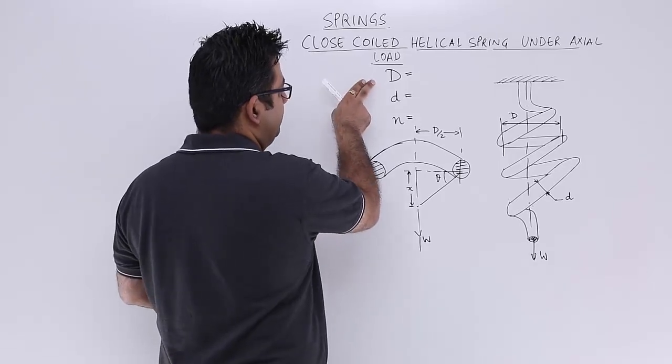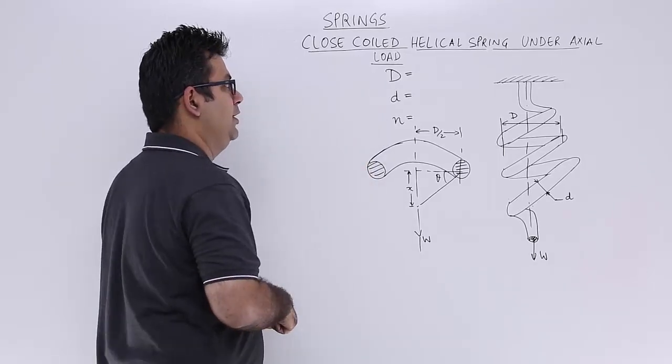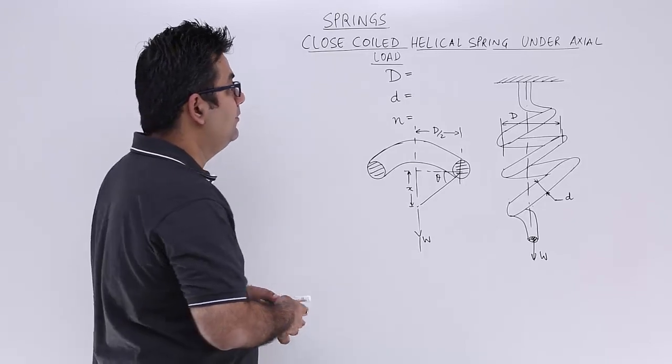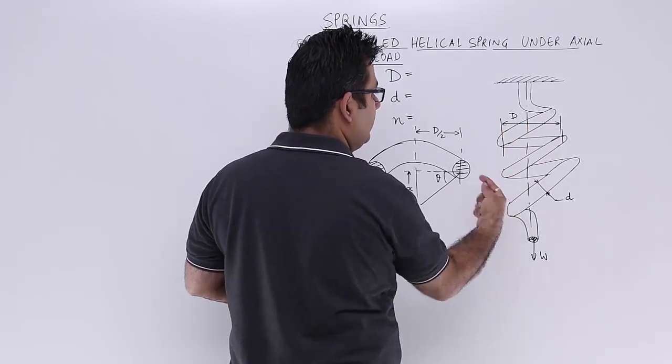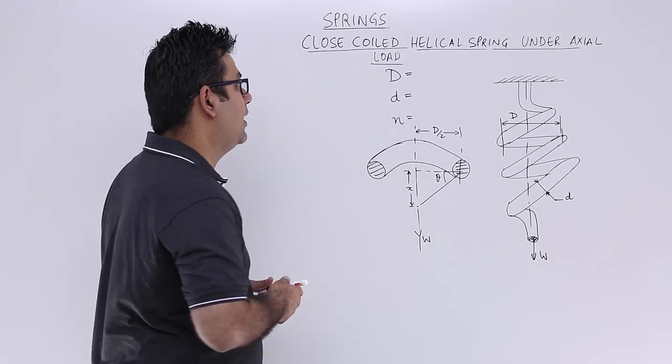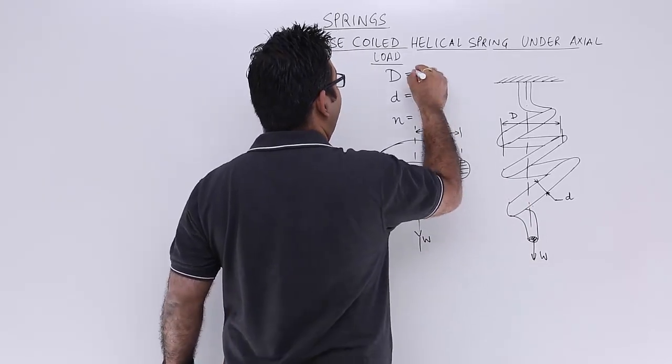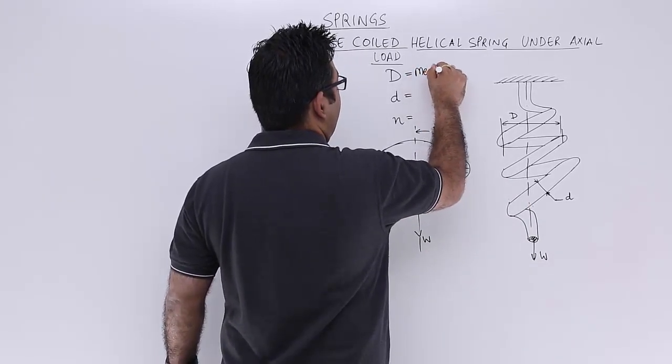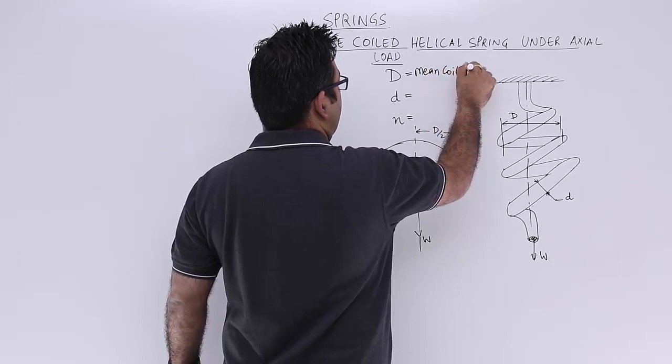First is D, then d, and n. D is the mean coil diameter, so this is the coil. The coil diameter is D and that's the average, so this is mean coil diameter.